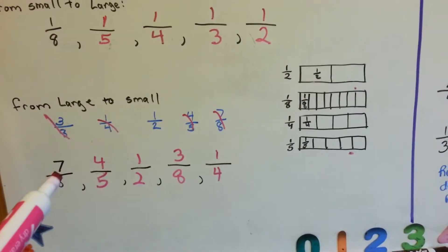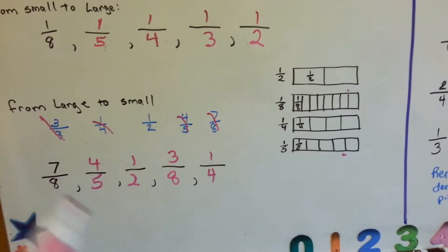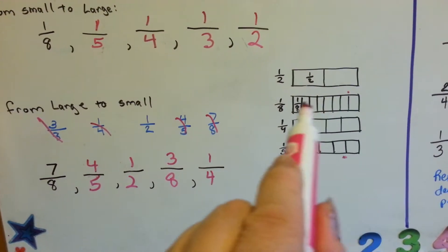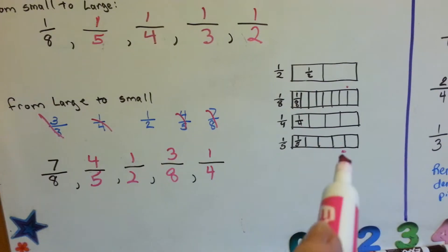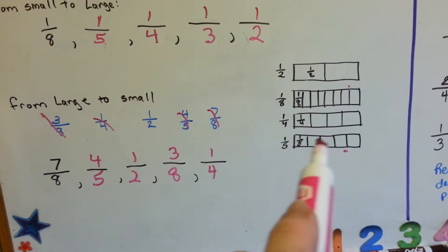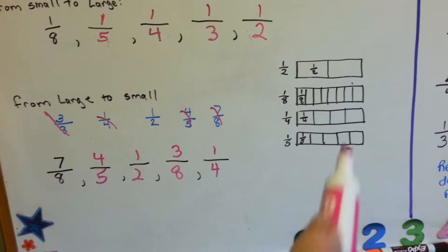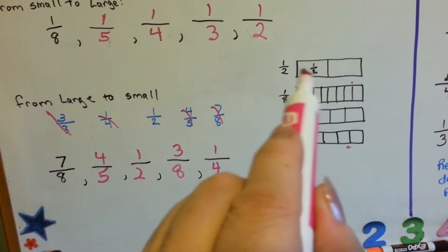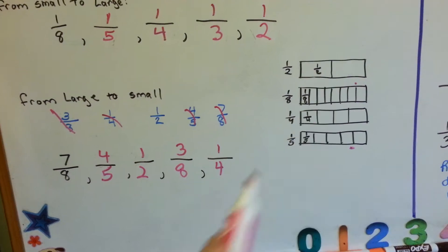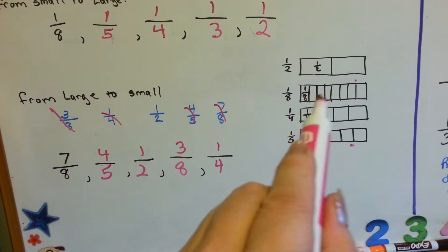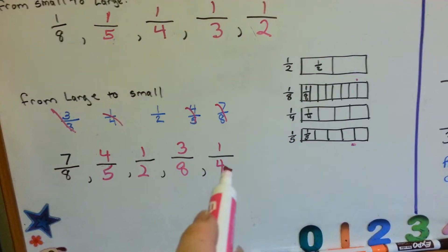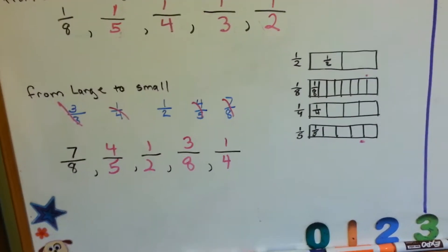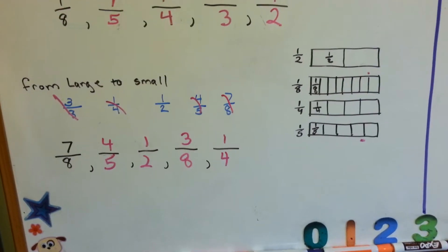So: seven-eighths is the biggest, then four-fifths, then half, then three-eighths, and then one-fourth is the smallest. We went from large to small.